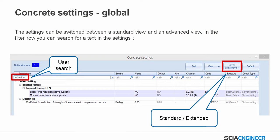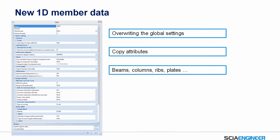The settings can be switched between a standard view and a more advanced view, and in the filter row you can search for text in the settings. We also have a new window for the 1D member data, which overrides the global settings — it has a higher priority. So all elements in your structure listen to the global settings, but you can override some beams or columns with 1D member data. It's also easy to copy them as attributes to other elements like beams, columns, and ribs.